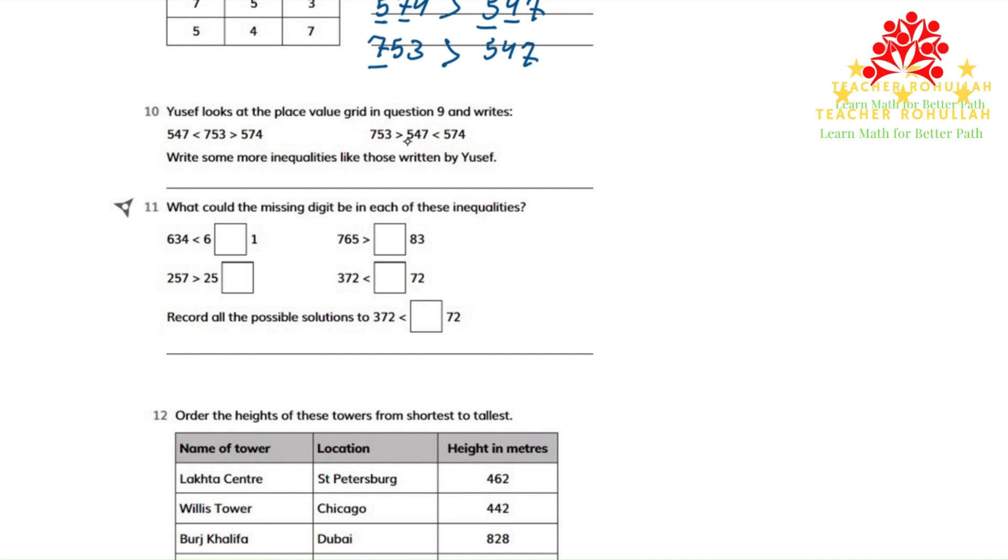753 is greater than 547, and 574 is also greater than 547. Write some more inequalities like those written by Yusuf.